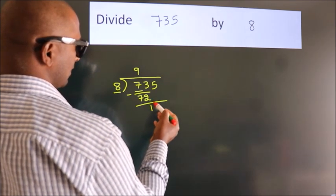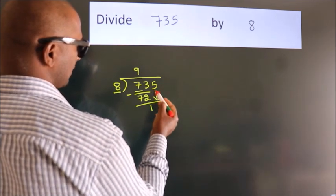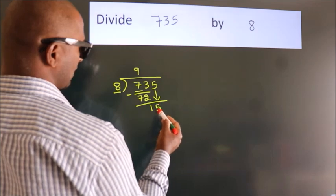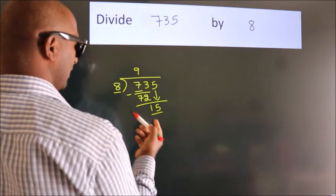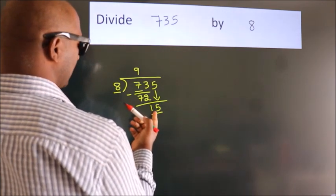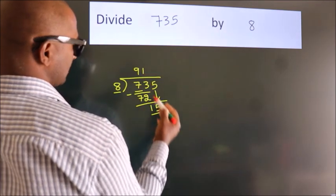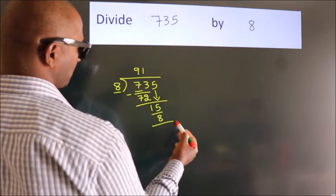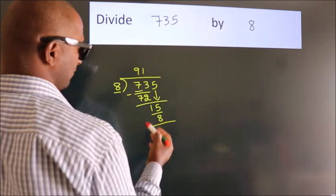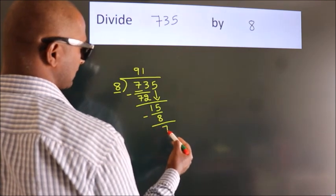After this, bring down the beside number. So 5 down, so 15. A number close to 15 in 8 table is 8 once 8. Now we subtract, we get 7.